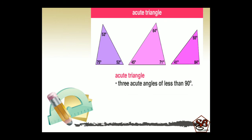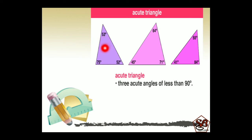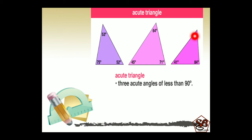Let's learn one by one. The first one is acute triangle. An acute triangle has three acute angles, all less than 90 degrees — that means all the angles inside the triangle are less than 90 degrees. You can see in the image: 53, 75 and 52; then 45, 71 and 64; then 55, 41 and 84. All the angles are less than 90 degrees inside the triangle. Such types of triangles are called acute triangles.